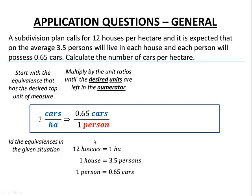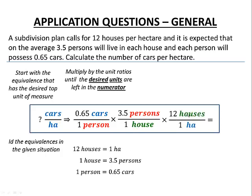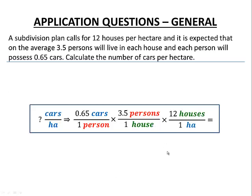We continue with our unit ratio technique by multiplying through with the other ratios until our desired units remain in both the numerator and denominator. I need to get rid of persons, so I write the next equivalence as persons per house — persons cancel. Then I need to get rid of houses, so I write that as houses in the numerator — houses cancel. I am left with cars per hectare, exactly the ratio I needed.